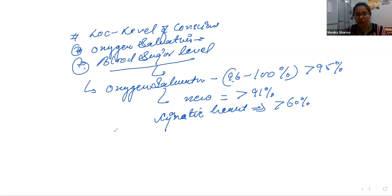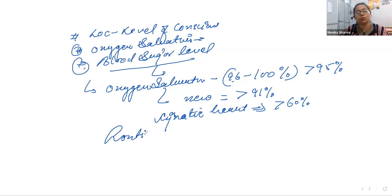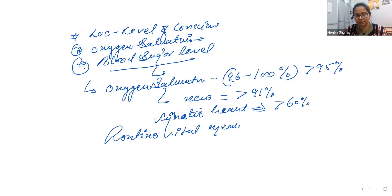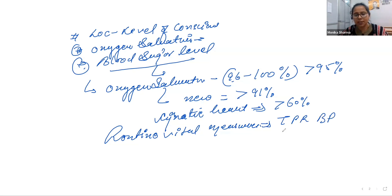When monitoring vital signs, the routine vital signs measurement sequence is: temperature, pulse, respiration, and blood pressure — TPR and BP — and after that, pain.